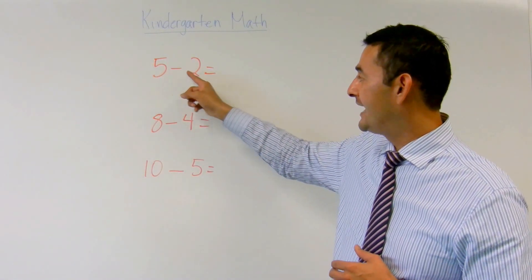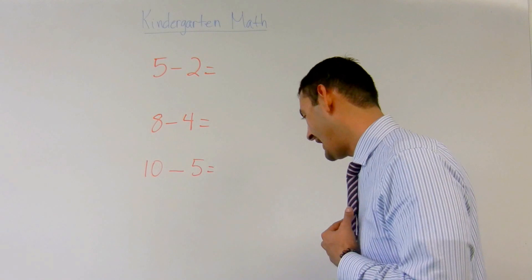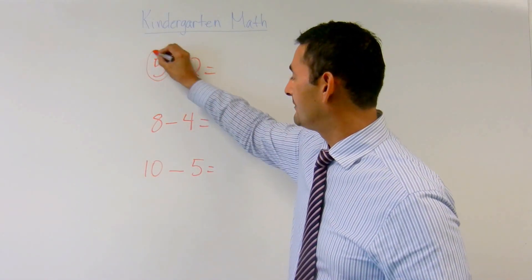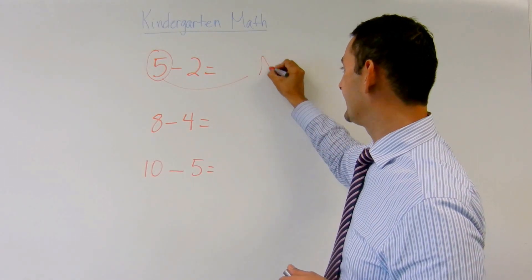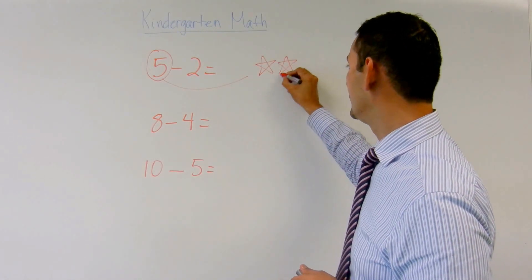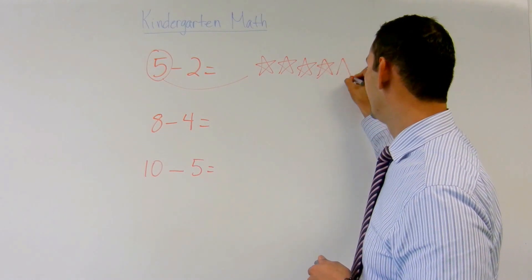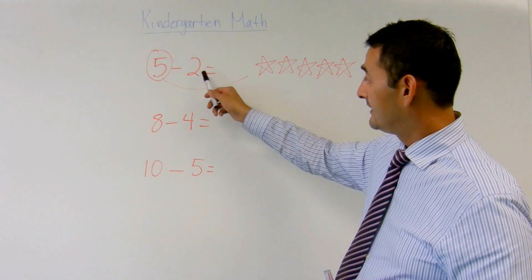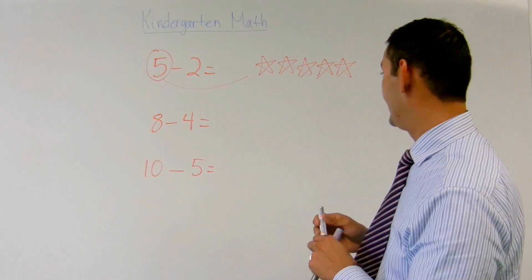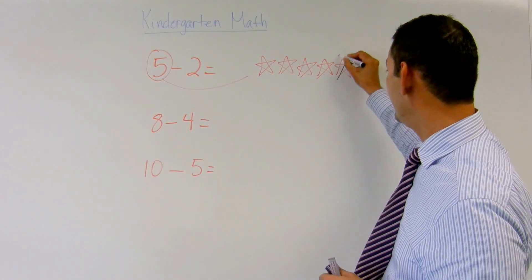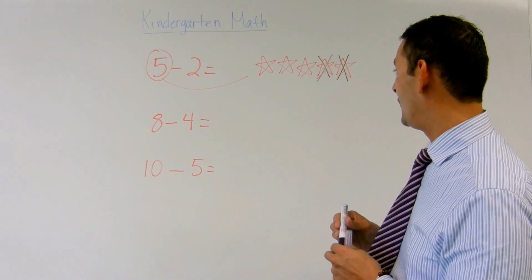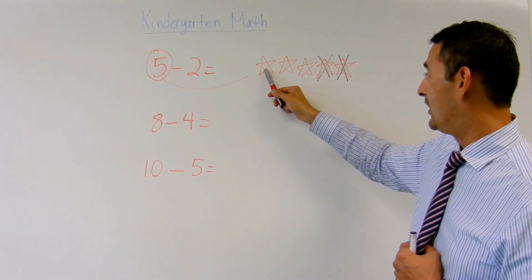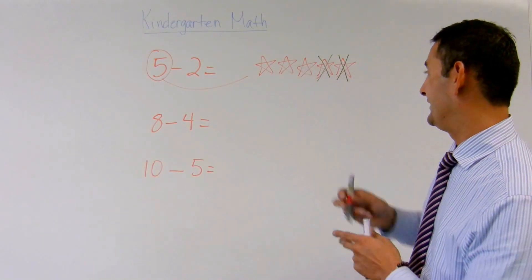Here we have five minus two — five take away two. So what I'm going to do is grab this number, move it over, and draw five objects: one, two, three, four, five. And now I'm going to take away two — one, two. So how many do I have left? Five take away two equals one, two, three — the answer is three.